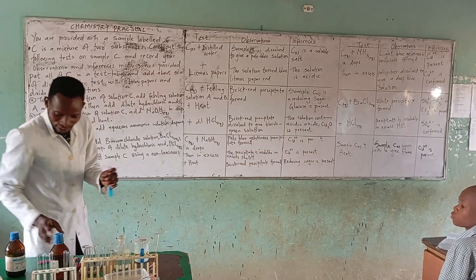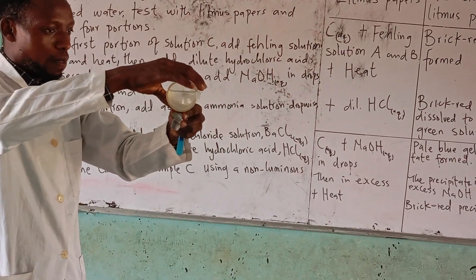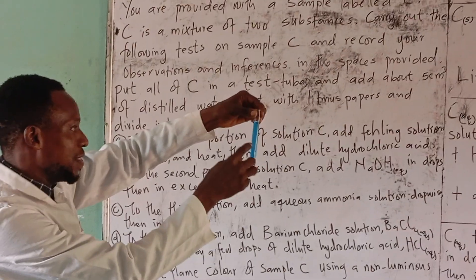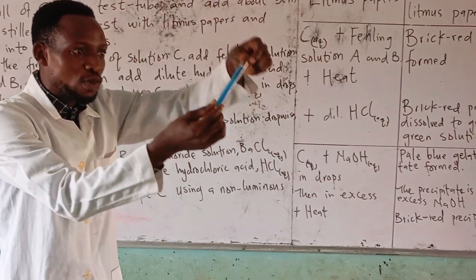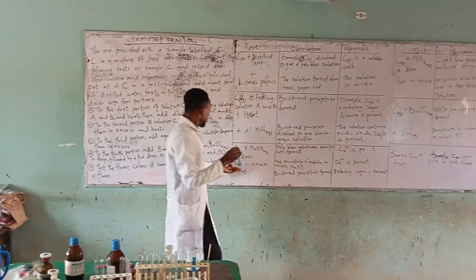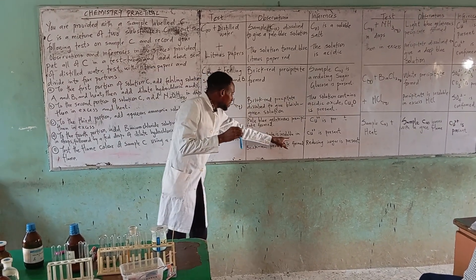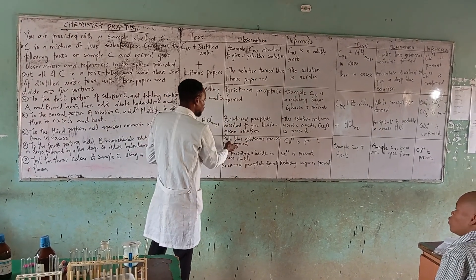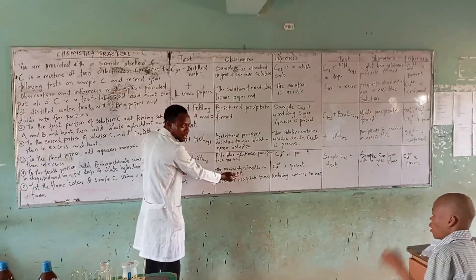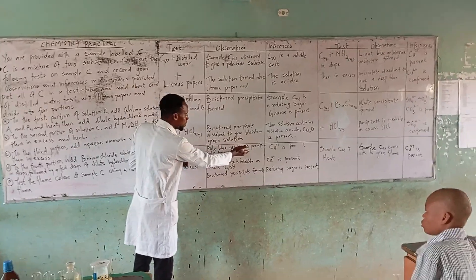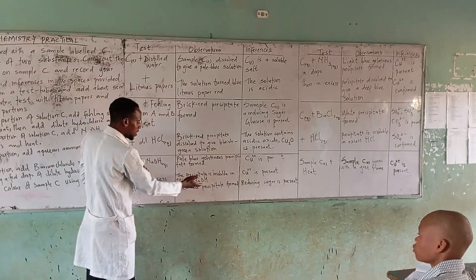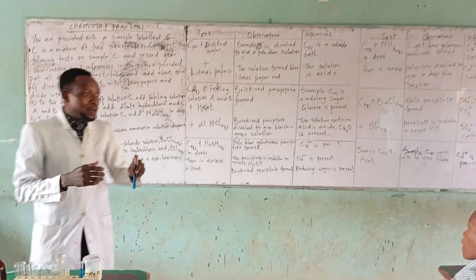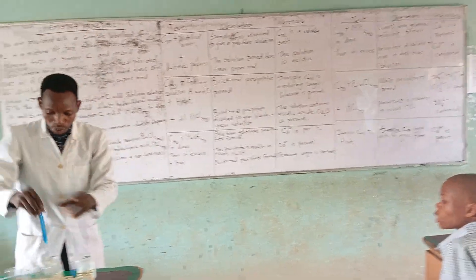Then in excess: let's add sodium hydroxide in excess and see what we get. We have the precipitate and the precipitate is still there — it is insoluble. So you come to your test and say 'then in excess': the precipitate is insoluble in excess sodium hydroxide. You can write it together: pale blue gelatinous precipitate formed, which is insoluble in excess sodium hydroxide. When heated, you get a blue-black precipitate, and blue-black is indicating that the solution contains a reducing sugar.